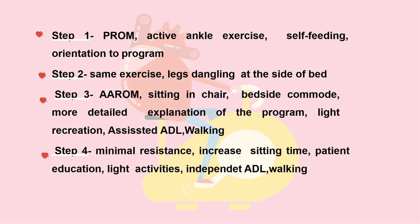The step-by-step exercise progression: Step 1 — passive exercises, range of motion, active ankle exercises, self-feeding, orientation to the program. Step 2 — same exercises, plus leg dangling at the side of the bed. Step 3 — active range of motion exercises, sitting in the chair exercises, bedside commode, and more program education. Mild walking and light recreational activities can be added.